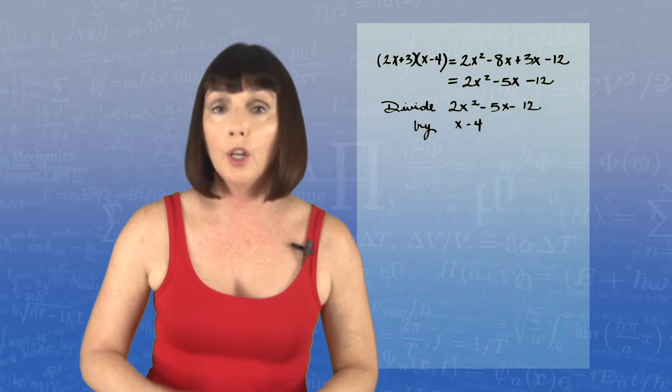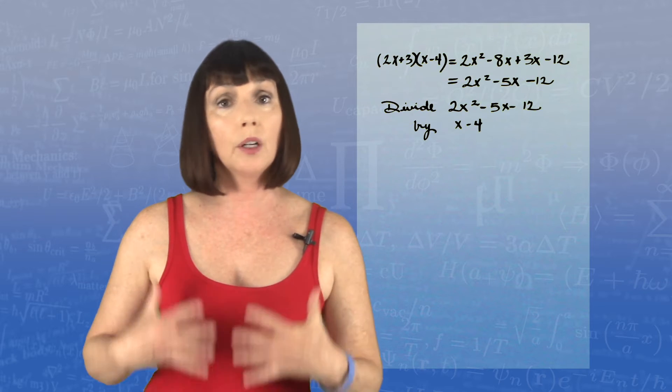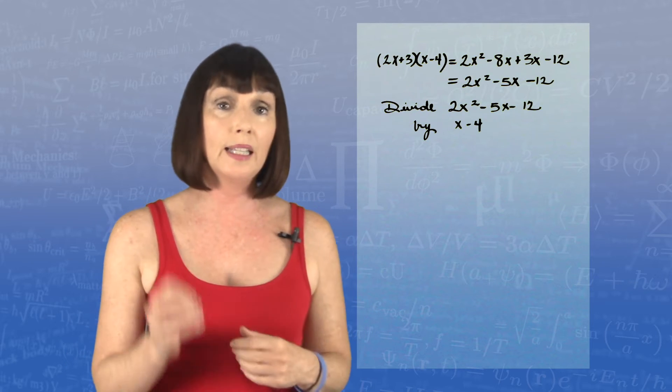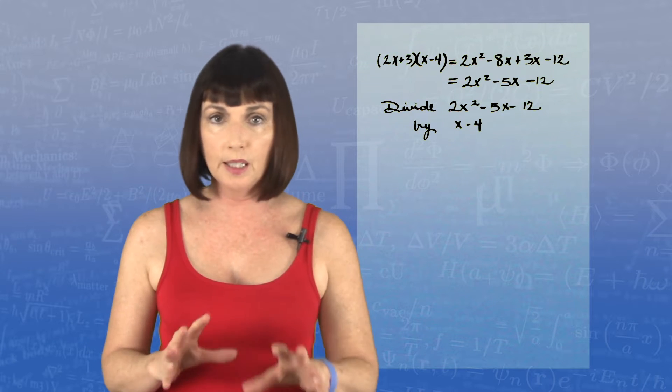Now if we were to divide 2x squared minus 5x minus 12 by x minus 4, we would expect to get a remainder of 0 because x minus 4 is a factor. So let's do that with synthetic division so we can see what's happening.